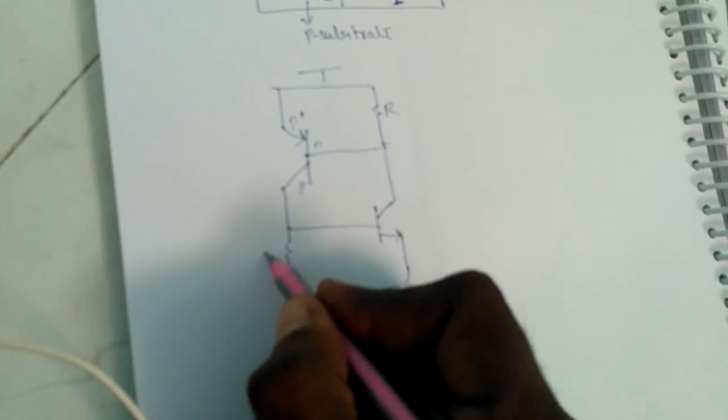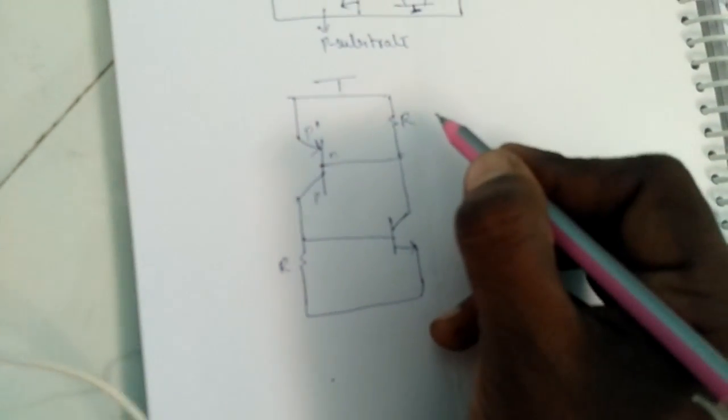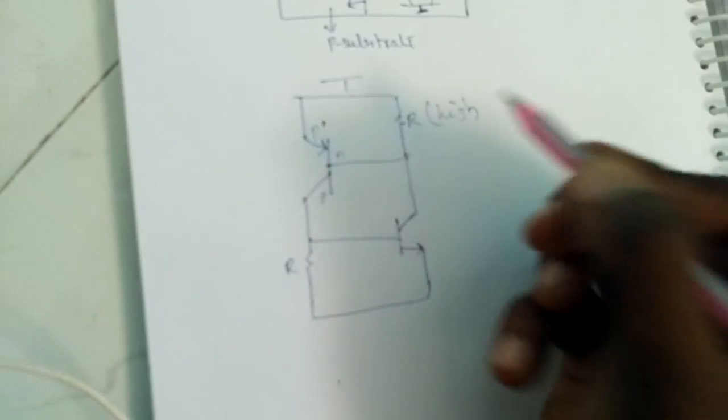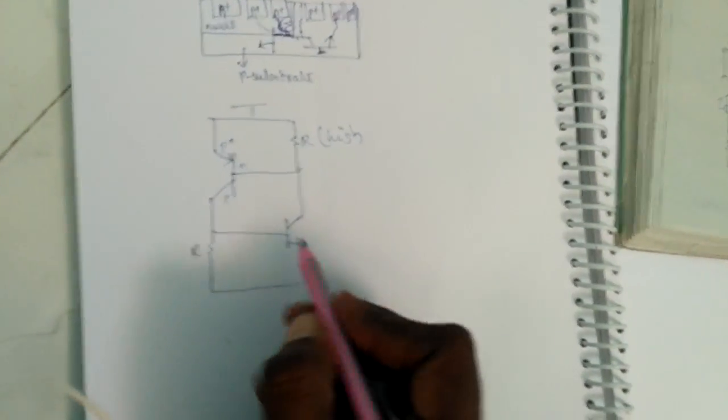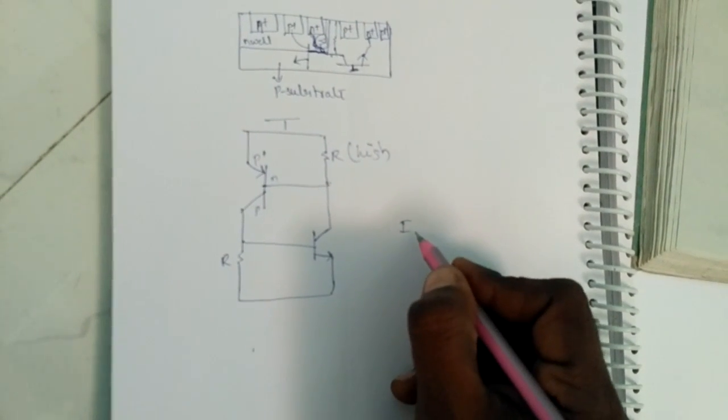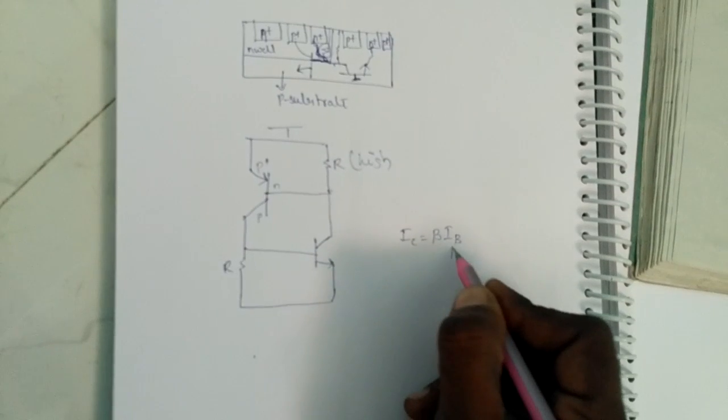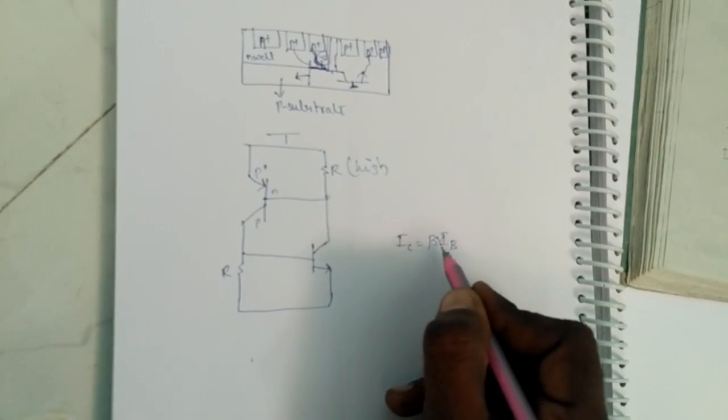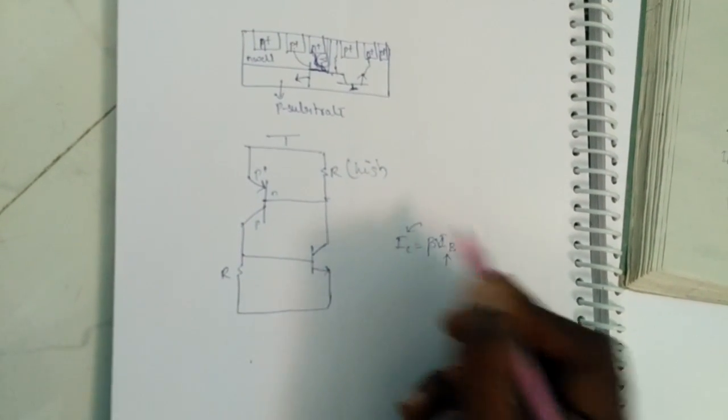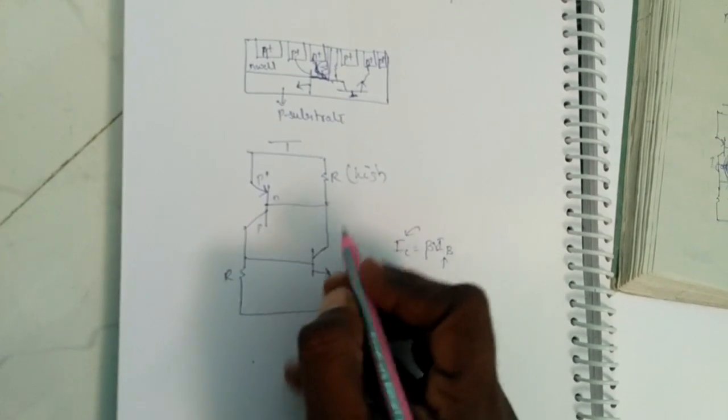R and this one is R. This resistance is high resistance. Generally, if we have an equation that IC equals beta into IB, base current is multiplication of beta, which is nothing but collector current.